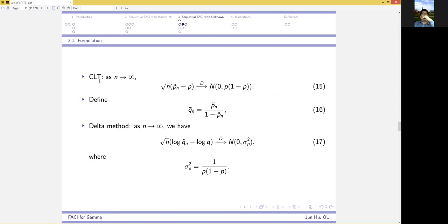Now, according to the central limit theorem and the delta method, we can claim the asymptotic normality of log of q hat in the same fashion, where the asymptotic variance, denoted by sigma p squared, is 1 over p times 1 minus p.